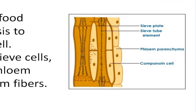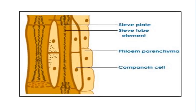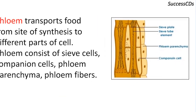Phloem is also composed of four types of cells. Sieve cells are elongated and have thin cell walls; these cells are responsible for transportation of food and nutrients. Companion cells have cytoplasm, nucleus, and other cell organelles; they perform the tasks required for sieve cells for living. Phloem parenchyma stores food. And lastly, phloem fibers have thick cell walls and provide mechanical support to the plant body.